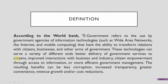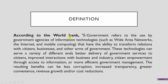According to the World Bank, e-government refers to the use by government agencies of information technologies such as wide area networks, the internet and mobile computing that have the ability to transform relations with citizens, businesses and other arms of government. These technologies can serve a variety of different ends: better delivery of government services to citizens, improved interaction with industry and business, citizen empowerment through access to information, and more efficient government management. The resulting benefits can be less corruption, increased transparency, greater convenience, revenue growth and cost reductions.